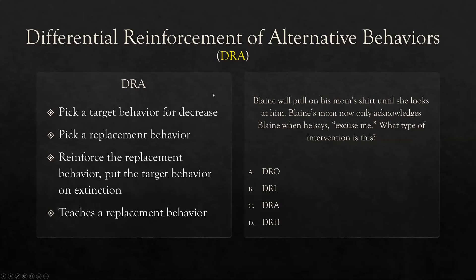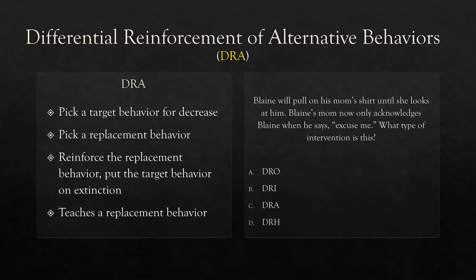DRA — differential reinforcement of alternative behaviors — is arguably the most common type we use. It's the easiest to use and probably the most effective. With DRA, it's just like DRI: pick a target behavior for decrease, pick a replacement behavior, teach a replacement behavior — but the main difference is your replacement behavior can happen at the same time as the old behavior. Pick a replacement behavior, reinforce the replacement behavior, put the target behavior for decrease on extinction. Very simple.